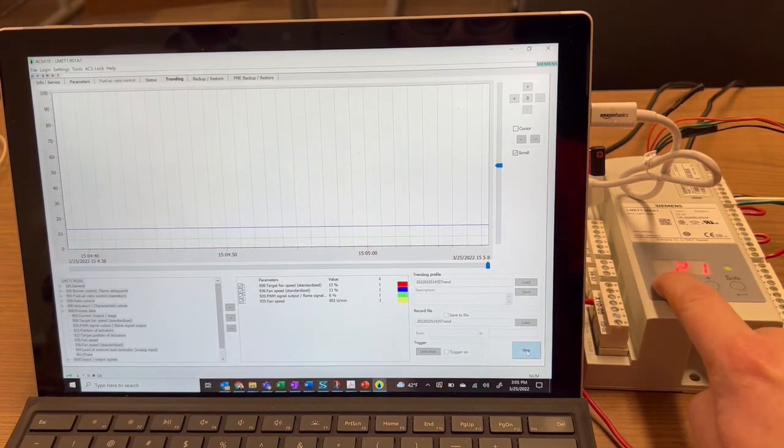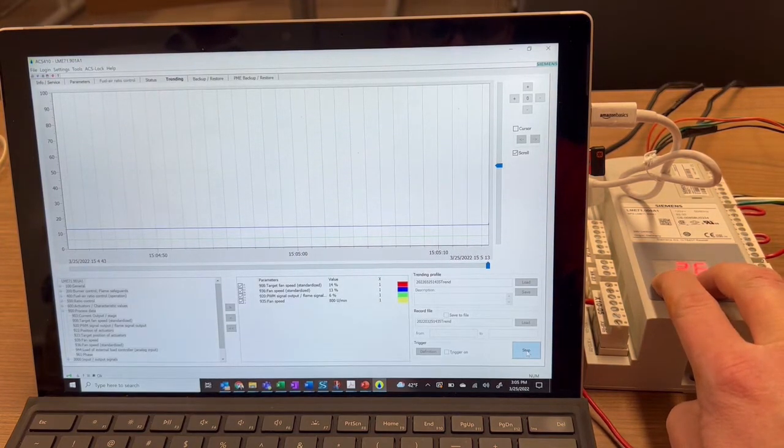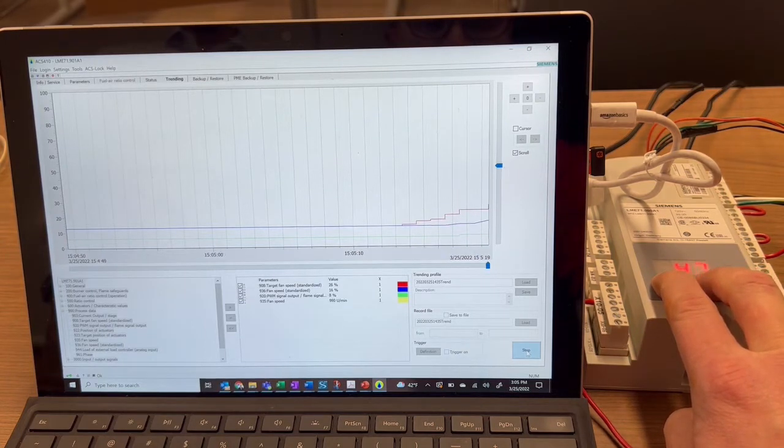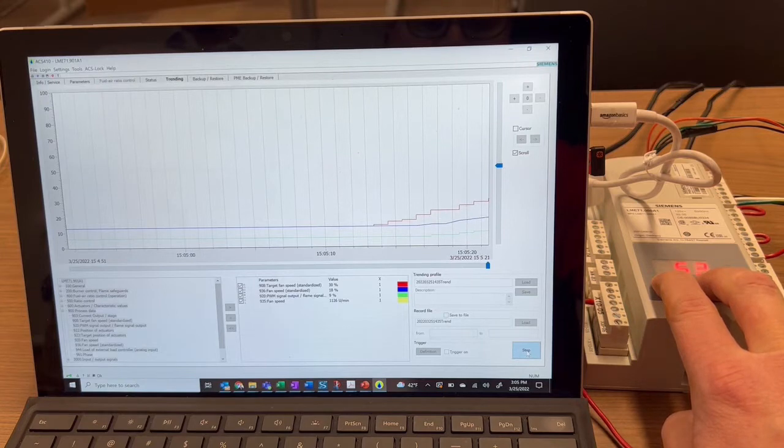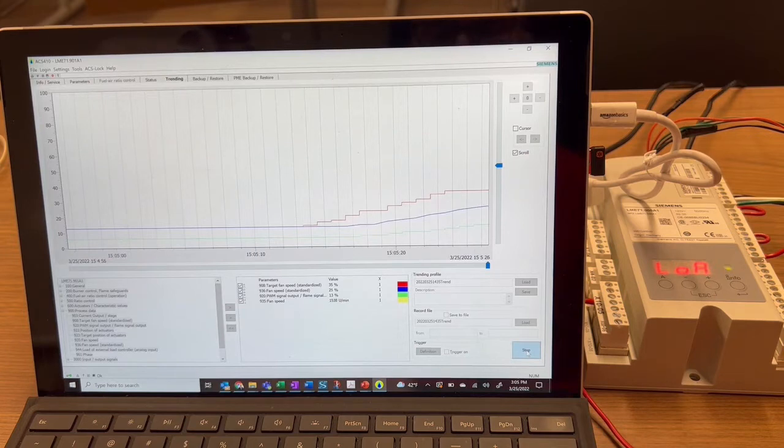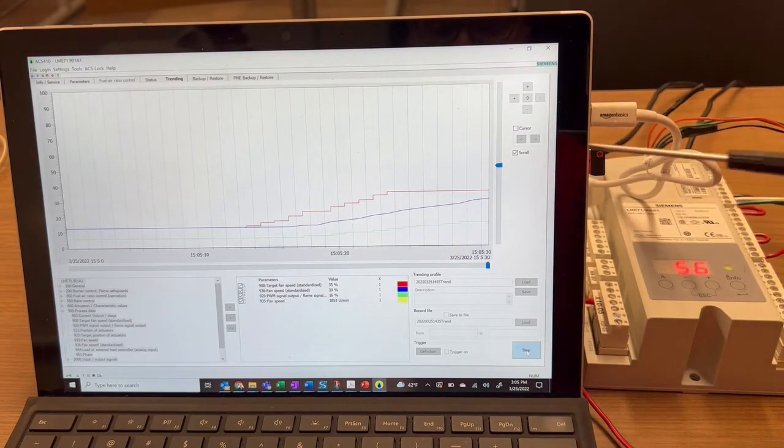Press and hold where it says load. And now I can manually drive up. We can see how the target speed changes in steps and the actual speed gradually increases.